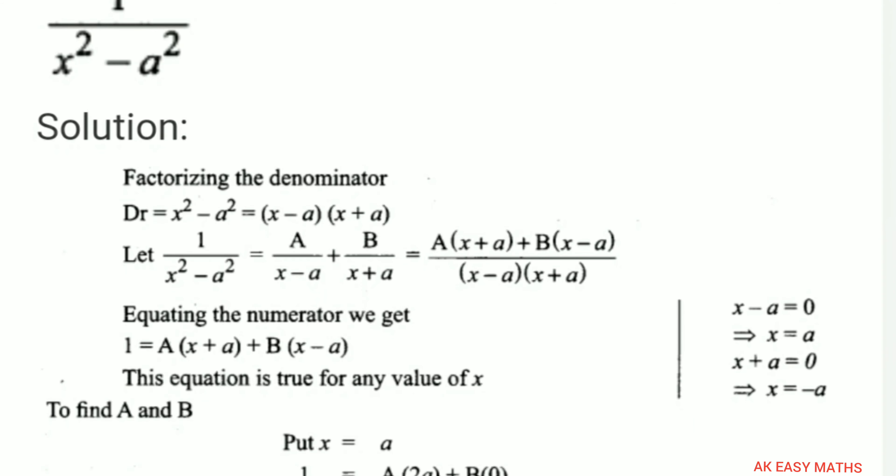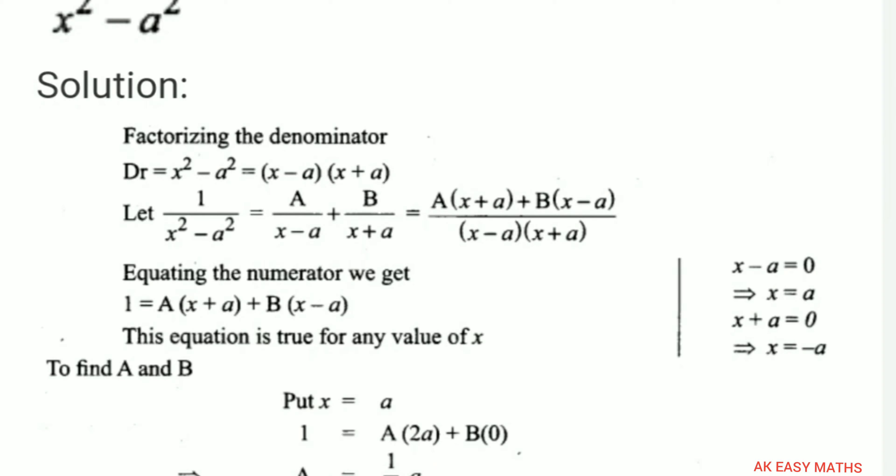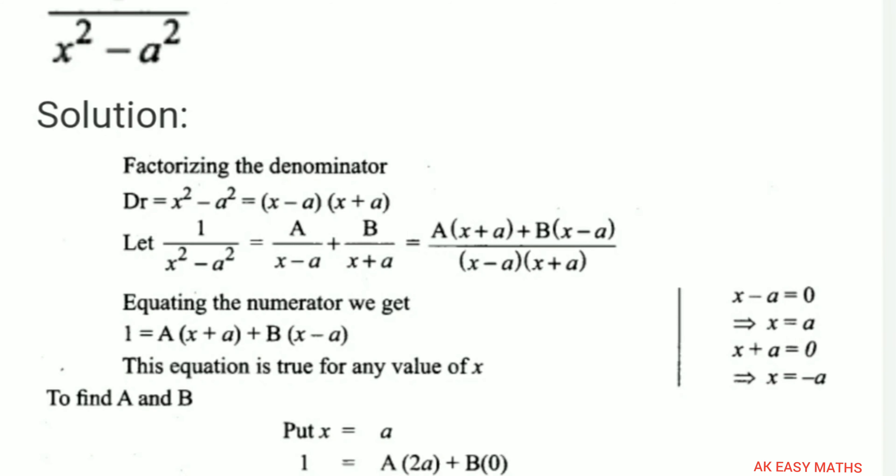The solution: Factorize the denominator. The denominator x square minus a square equals (x minus a)(x plus a), using the a square minus b square formation. Let 1/(x² - a²) = A/(x - a) + B/(x + a). Taking cross multiplication, the basic denominators are removed.